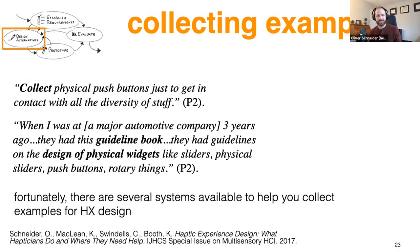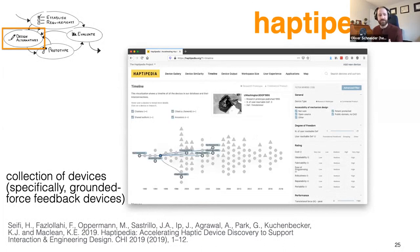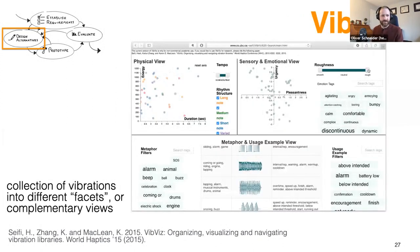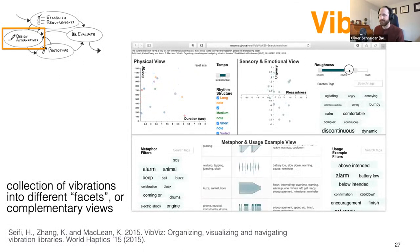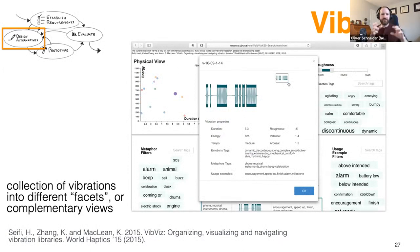There are several systems available to help you collect examples for HX design. Haptopedia, developed by Hasi Saifi and collaborators, is a collection of devices — specifically grounded force feedback devices — available online. You can browse it, see workspaces, history, and what applications they might be good for. Another tool, also by Hasi Saifi, is ViveViz — a collection of vibrations organized into different facets. You can filter along sensory and emotional views or filter by duration, allowing you to frame your exploration however you want.